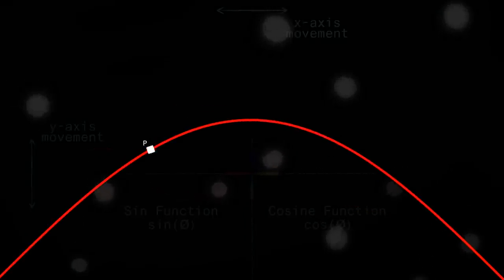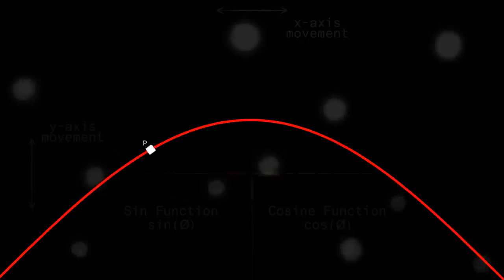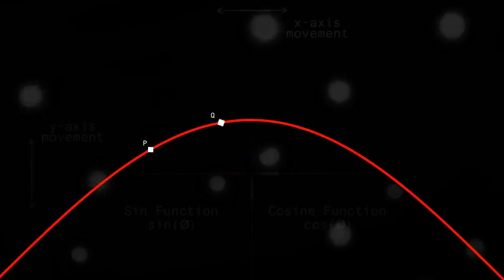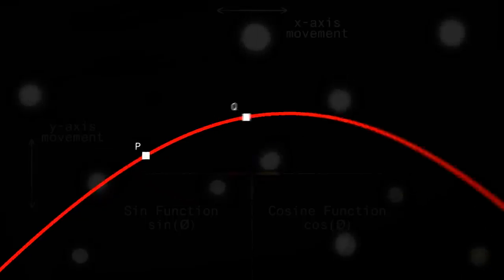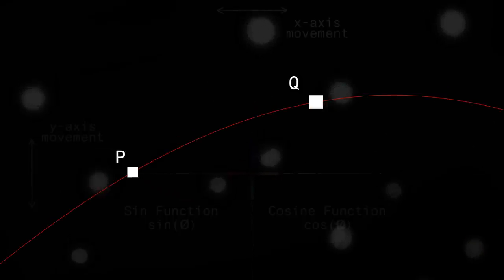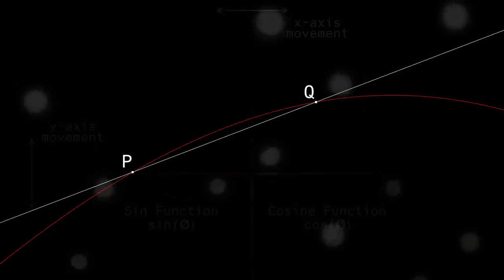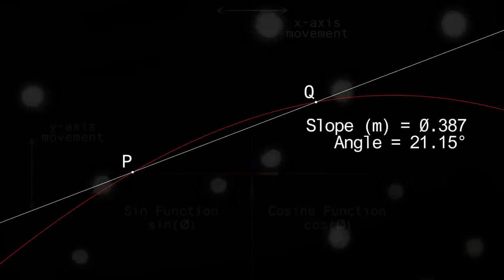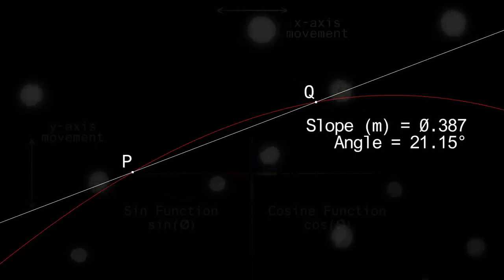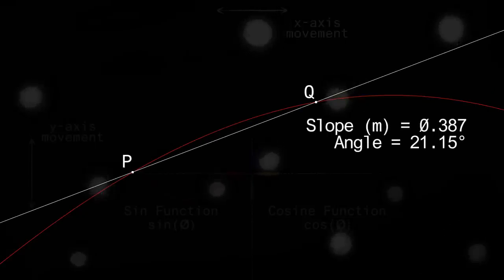We'll call this point P. We can approximate this slope by finding the rise over run of a secant line that passes through P and an arbitrary point Q. Note that our initial approximation of slope is 0.387, or 21.15 degrees from horizontal.